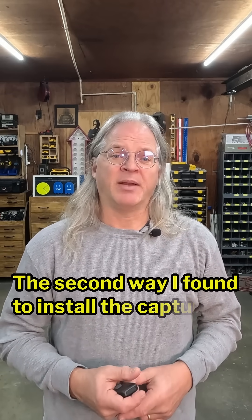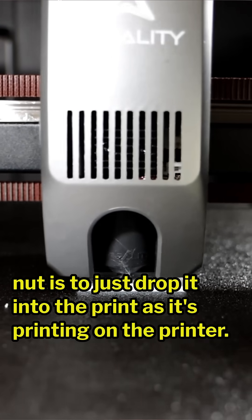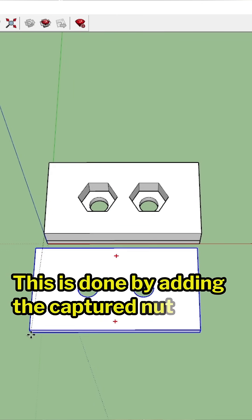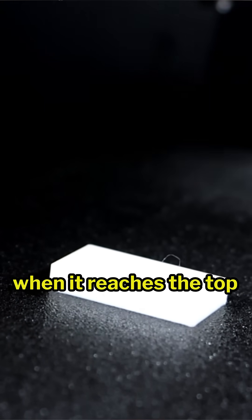The second way I've found to install a captured nut is to just drop it into the print as it's printing on the printer. This is done by adding the captured nut into the 3D model and then telling the printer to pause when it reaches the top layer of the nut.